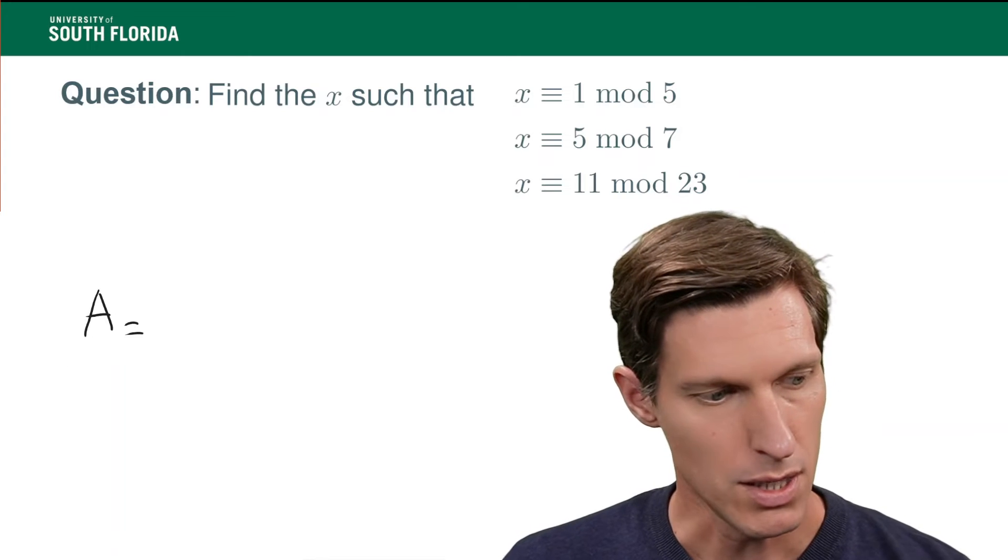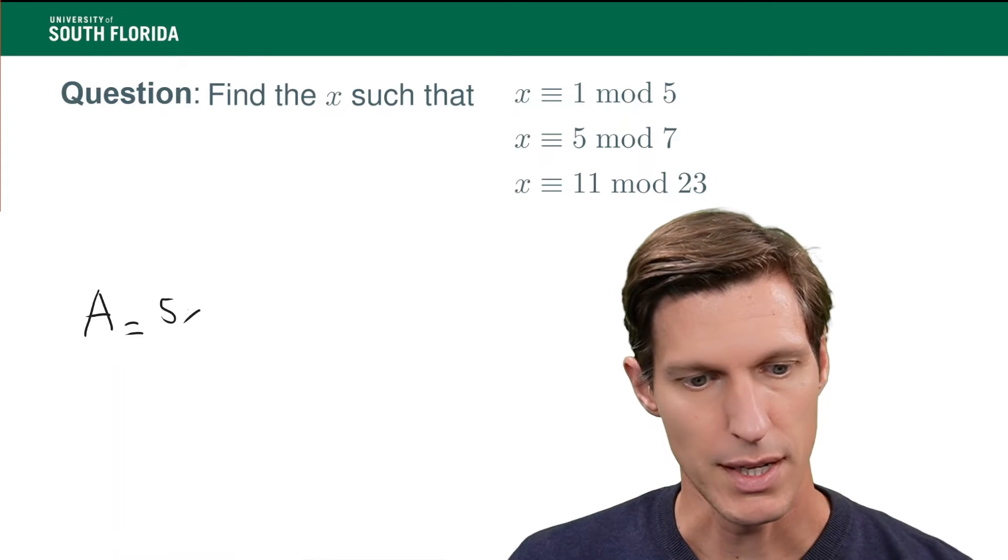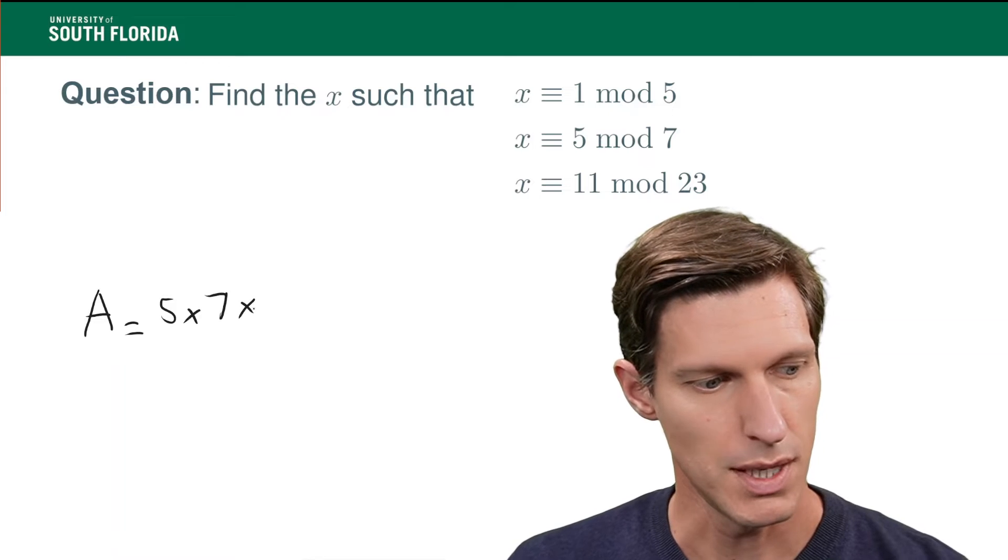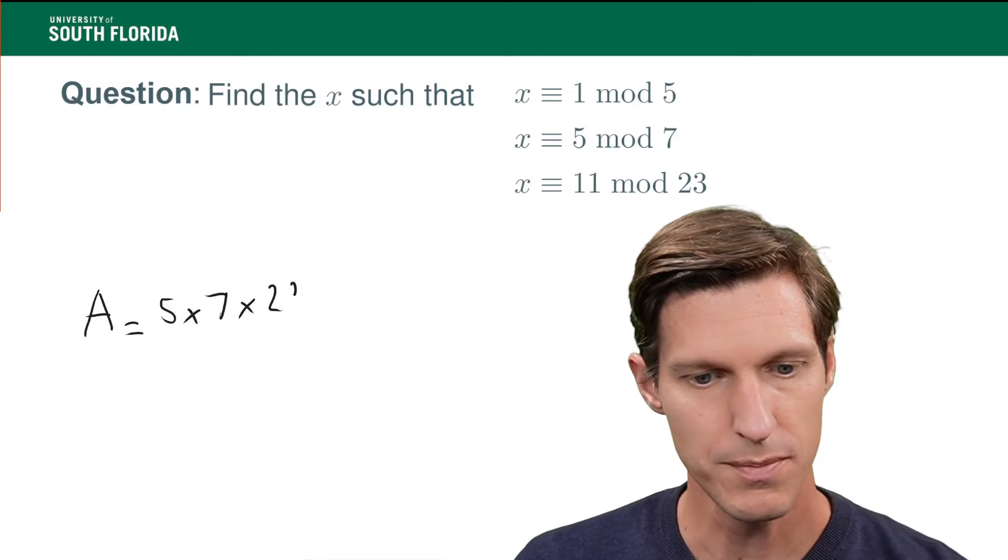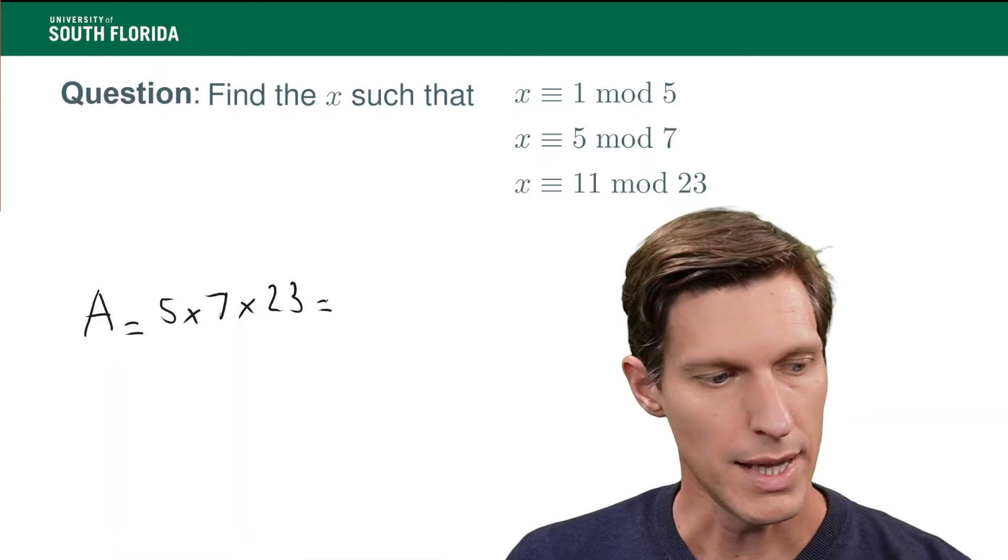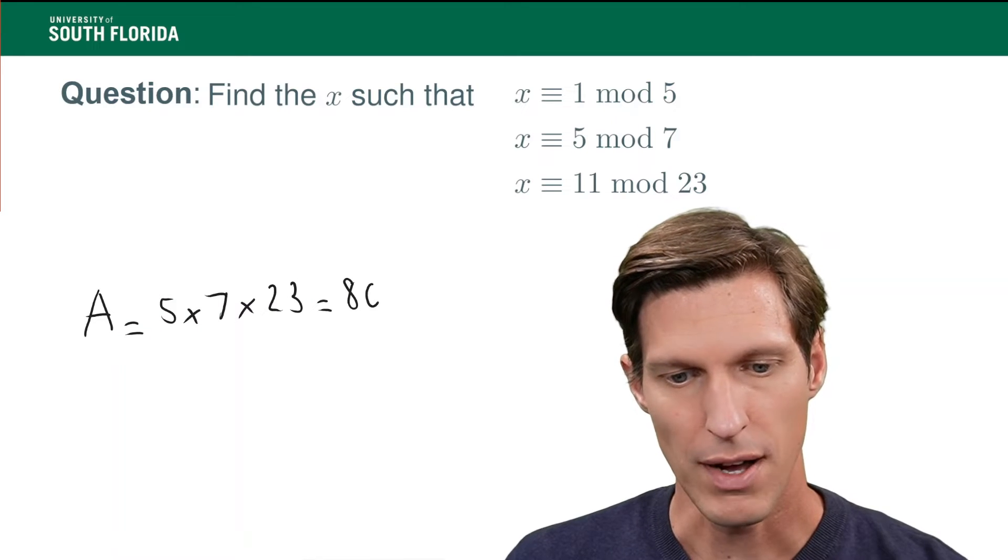So, a equals 5 times 7 times 23, and that is 805.